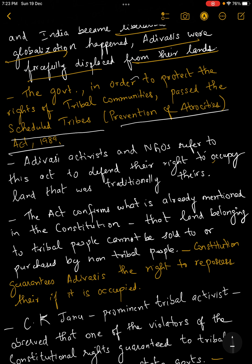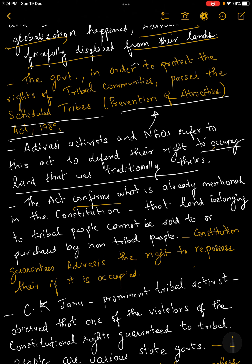Since it is a Prevention of Atrocities Act, many activists who work towards the betterment of Adivasis, as well as NGOs working in this field, make use of this act to defend the right of tribals to occupy land that has always been traditionally theirs. In case tribal communities have been evicted from their lands, they can use this act to defend that right. Basically, this act confirms what is mentioned in the constitution — that tribal people are an integral element of Indian society.